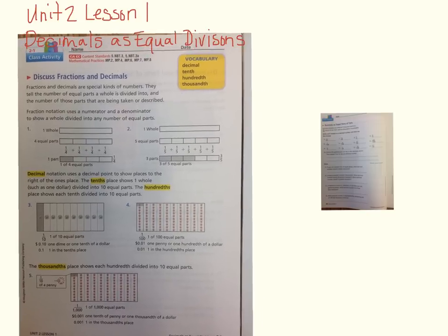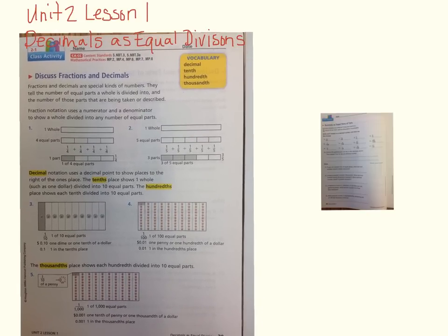Some of our vocabulary for this lesson are decimal, tenth, hundredth, and thousandth. We're hoping that this isn't completely new to you. This was gone over in fourth grade, so it should be a little bit of a review. Fractions and decimals are special kinds of numbers. They tell the number of equal parts a whole is divided into and the number of those parts that are being taken or described.